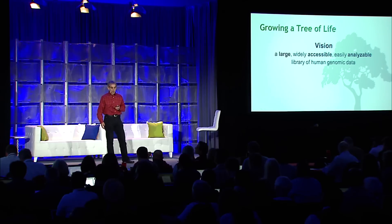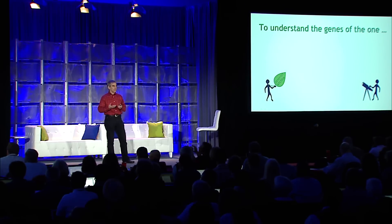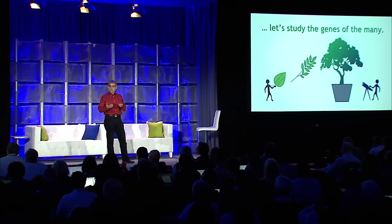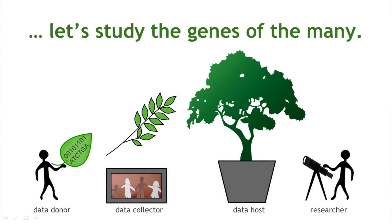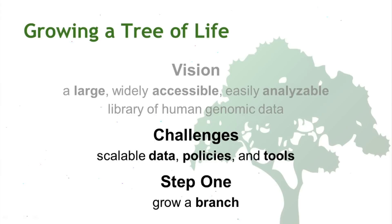This is the goal — this is what we want. How do we get there? If you want to really understand the genes of one person, which is the point — we intervene at n equals one — you need to study the genes of the many. And you can't do that by directly connecting donors and researchers one at a time. You need a whole set of mechanisms, including social processes in communities, including technical bits to pull together the information. The challenge is: how do we make this scale? How do we make the data scale, the policy scale, the tool scale?